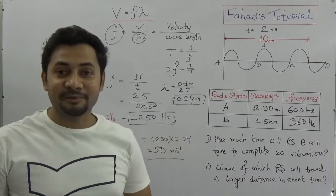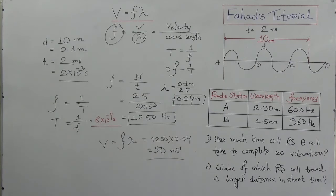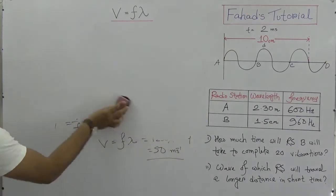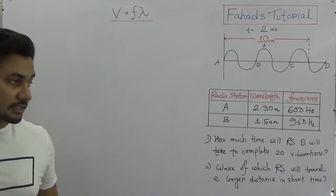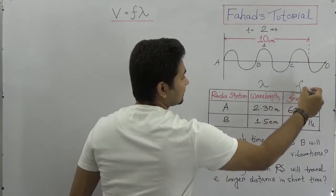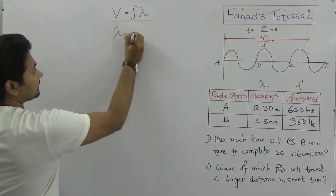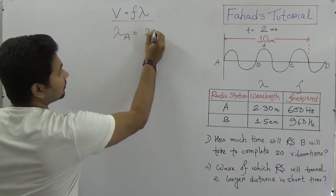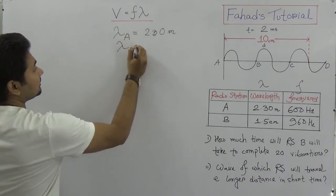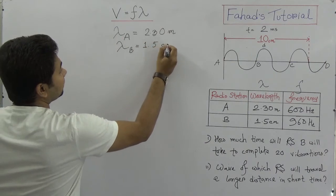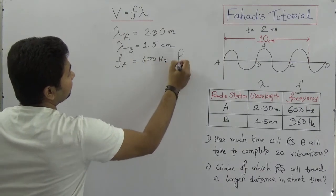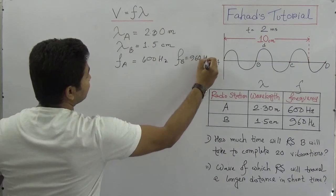Now consider the second problem. Radio station A and radio station B — two radio stations are given. The wavelength of A is 2.30 meters, and the wavelength of B is 1.5 centimeters. The frequency of A is 600 hertz and the frequency of B is 960 hertz.